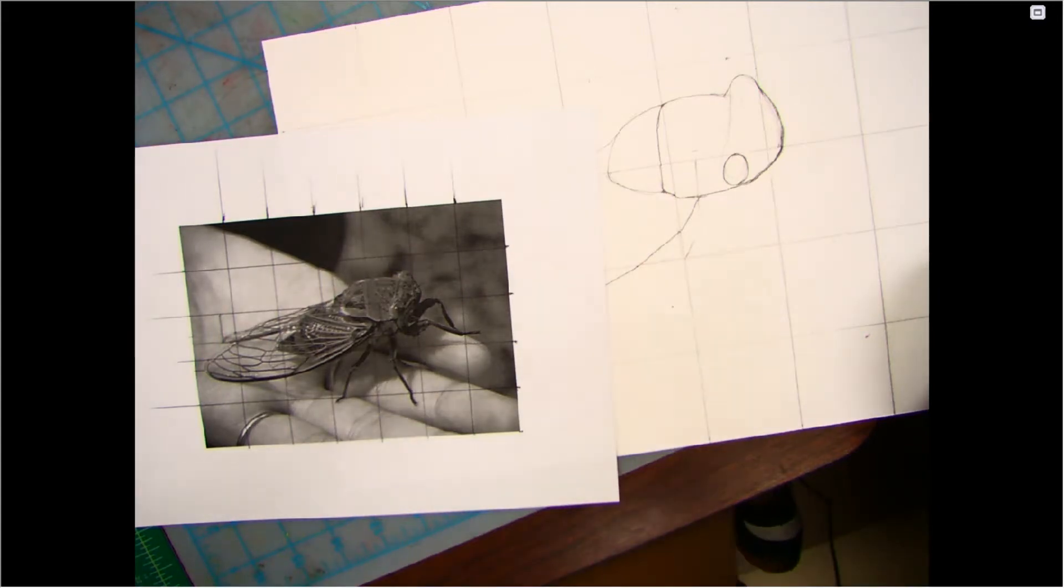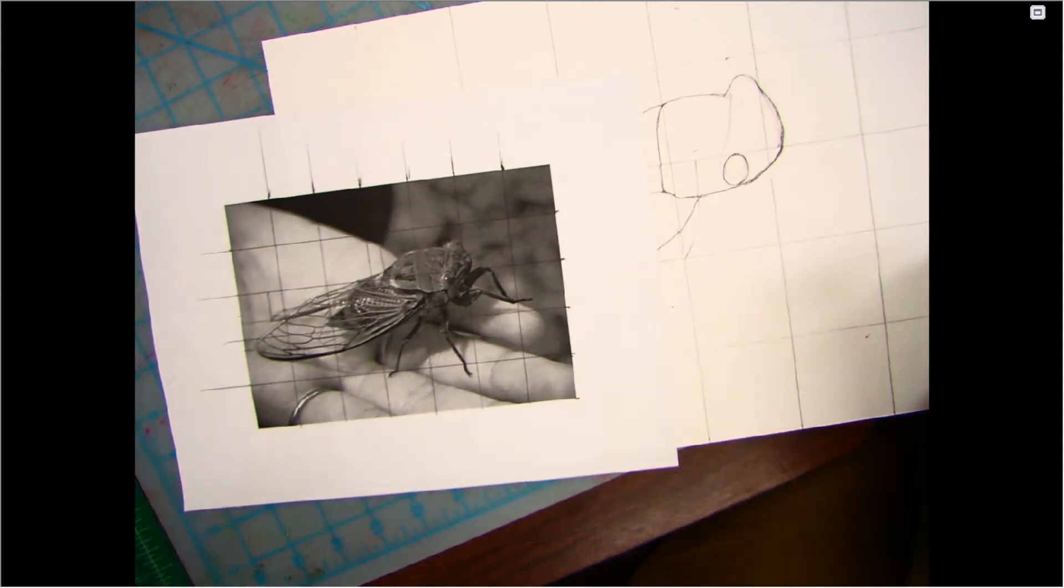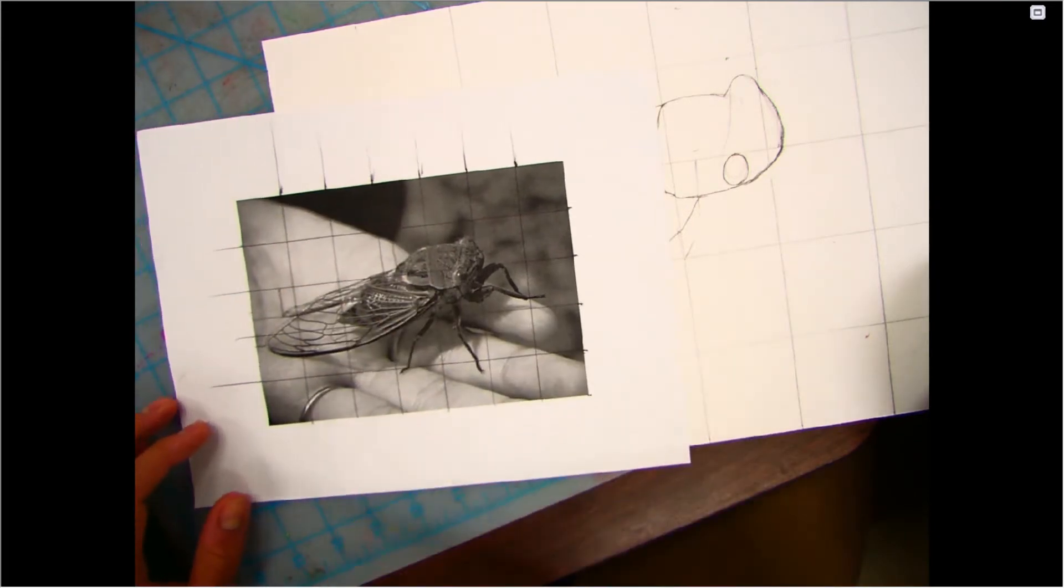Alright guys, so this is the step two of your broken values project. Essentially, our first step, like you guys remember, I printed you guys out five by seven inch images. You had the choice of choosing one yourself or I handed you one if you didn't get that printed in time.